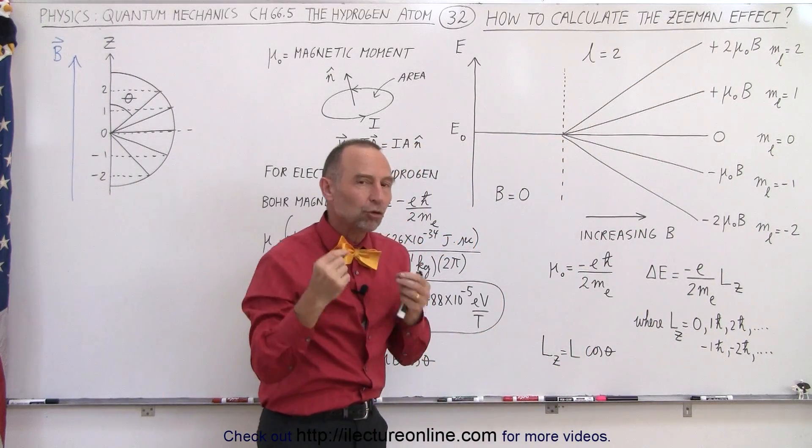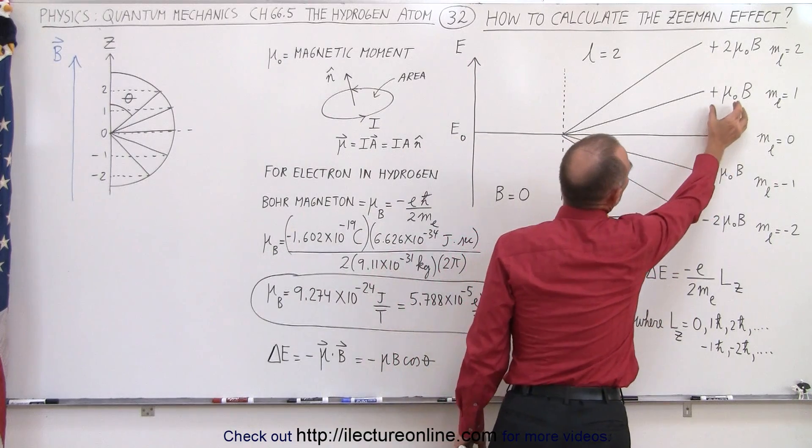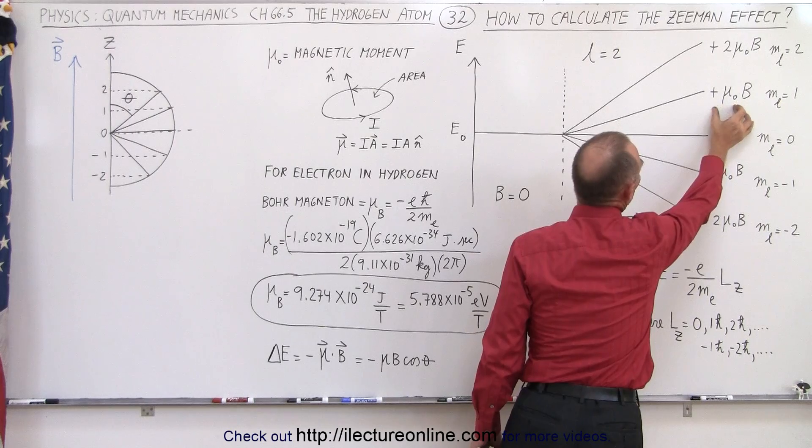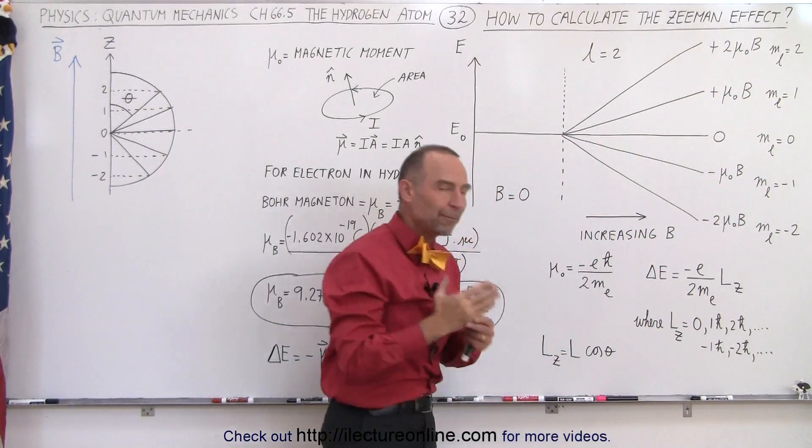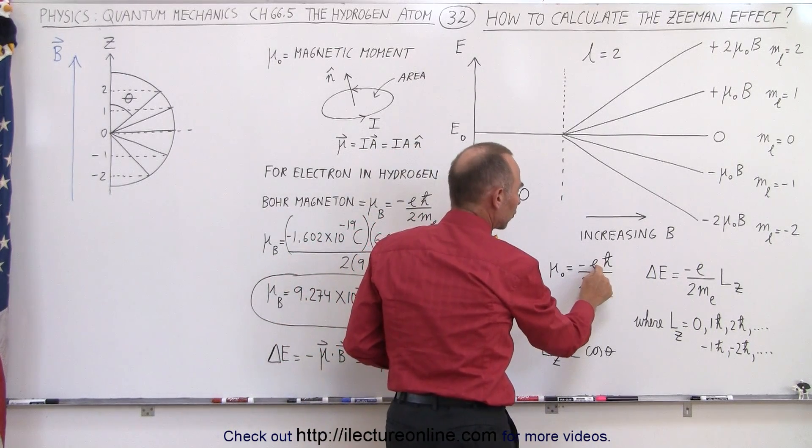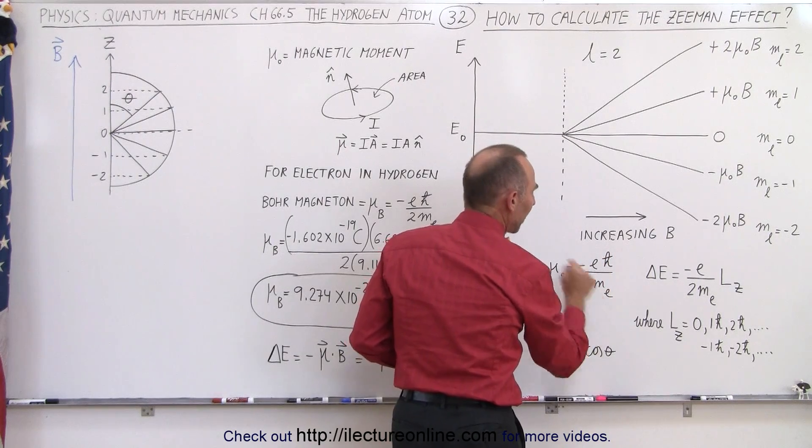It's going to be calculated in terms of U sub naught. This is the magnetic moment multiplied times the strength of the field, and the magnetic moment depends upon what the M sub L is. We're going to start with the basic concept of the magnetic moment. It is equal to the charge of the electron times H bar divided by twice times the mass of the electron.